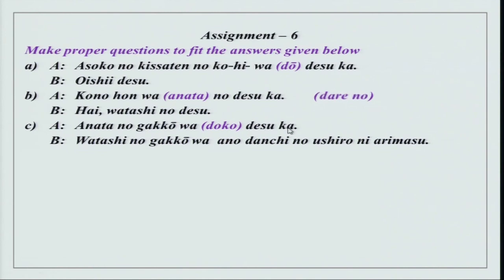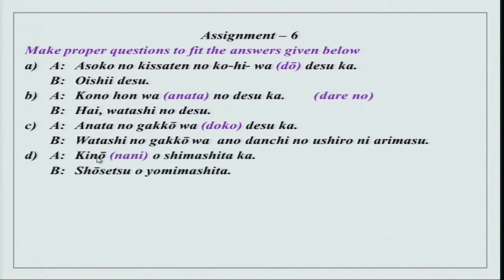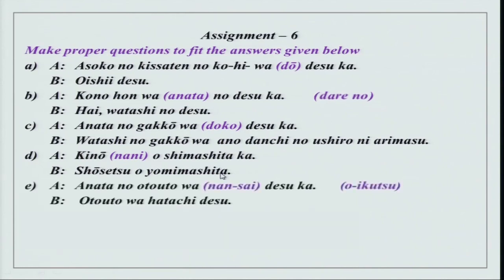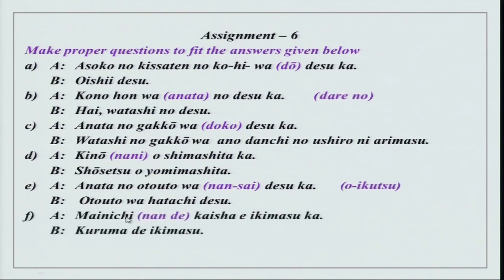Anata no gakkou wa doko desu ka? Watashi no gakkou wa ano danchi no ushiro ni arimasu. Kinou, nani wo shimashita ka? Shousetu wo yomimashita. Anata no otouto wa nan-sai desu ka? Mainichi, nande kaisha e ikimasu ka? Kuruma de ikimasu. If it was mainichi kuruma de kaisha e ikimasu ka? — Hai, kuruma de kaisha e ikimasu.